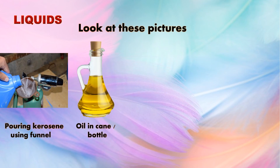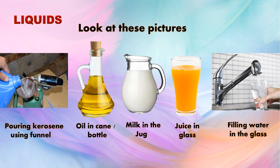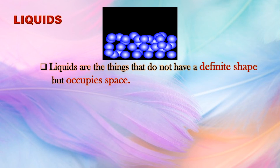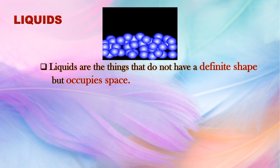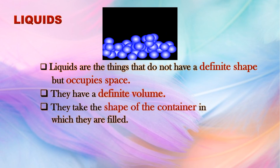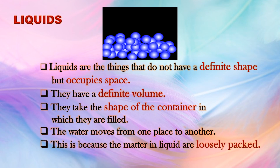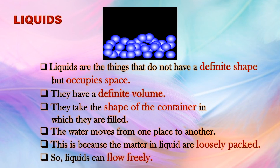Liquids. Look at these pictures. Here we can see that the shape of the liquid is determined by the shape of the container. Liquids are things that do not have a definite shape but occupy space. They have a definite volume and take the shape of the container in which they are filled. The matter in liquids is loosely packed, so liquids can flow freely.